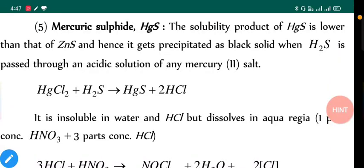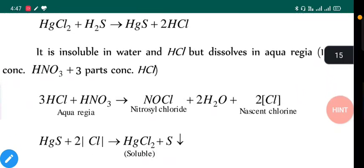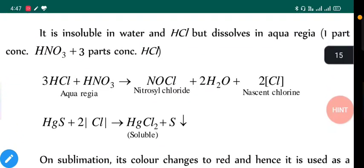Mercury sulfide or HgS: The solubility product of HgS is lower than that of CdS, and hence it gets precipitated as black solid when H₂S is passed through the acidic solution of any mercury(II) salt. So HgCl₂ with H₂S gives HgS and HCl. It is insoluble in water and HCl.